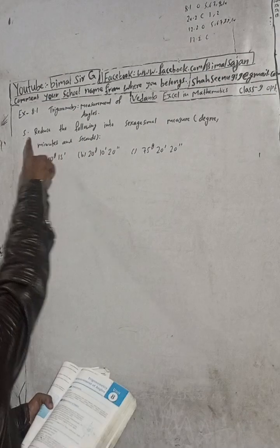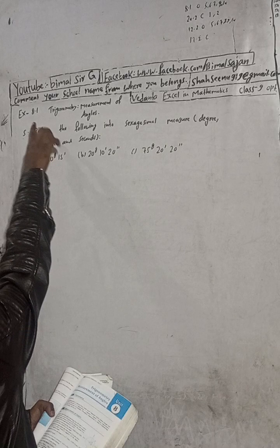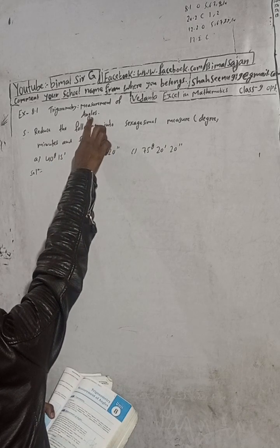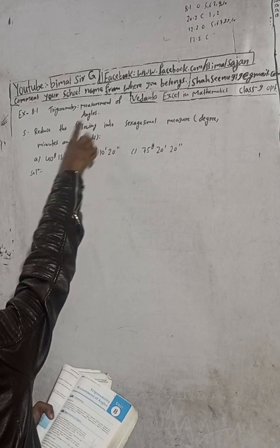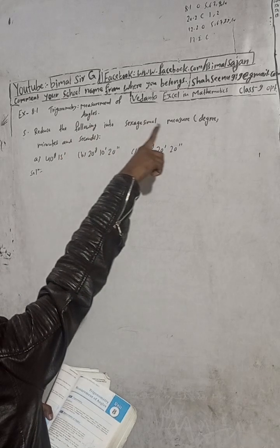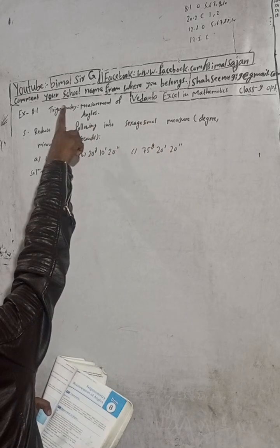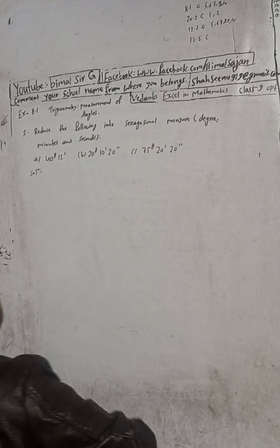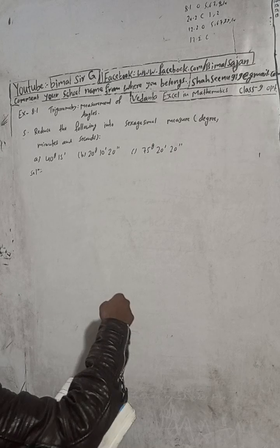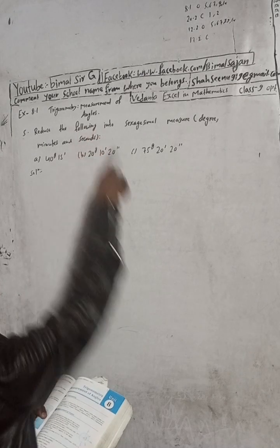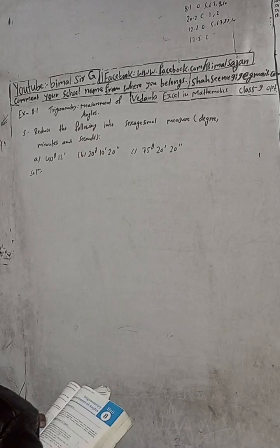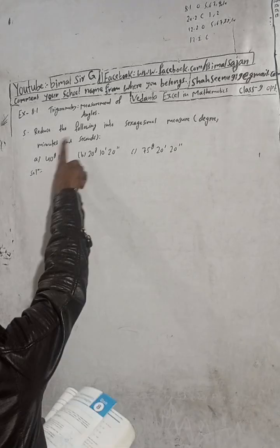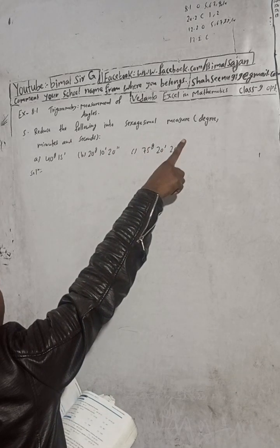This is question number five, exercise 8.1 — trigonometry, measurement of angles. Don't forget to check the playlist where you will get a lot of solutions. The question here is: reduce the following into sexagesimal decimal measure.